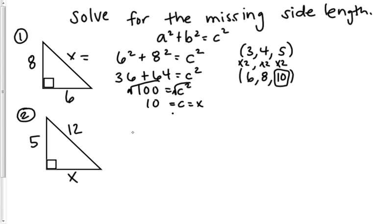So, you have 5 squared plus x squared is equal to 12 squared. I could have put b squared there or a squared. It doesn't matter. So, that is 25 plus x squared is equal to 144.